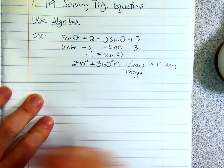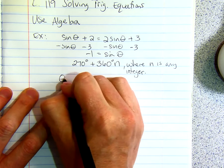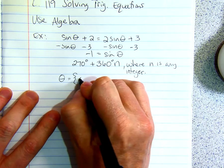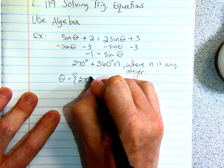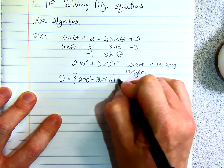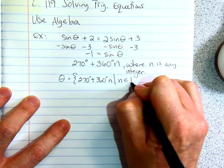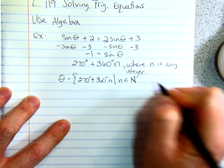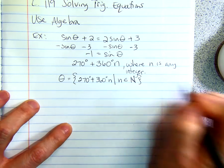So you can write it like this. Theta equals, in braces, 270 degrees plus 360 degrees N such that N is contained in the natural numbers. Wait. Integers, sorry. That means integers.